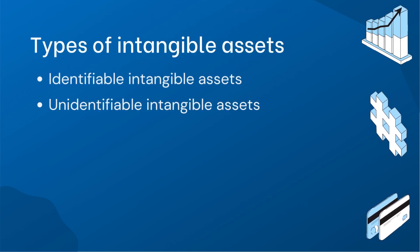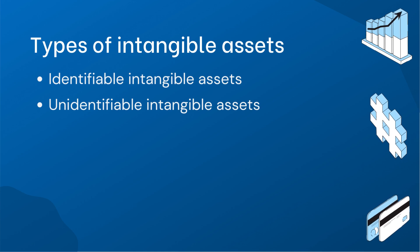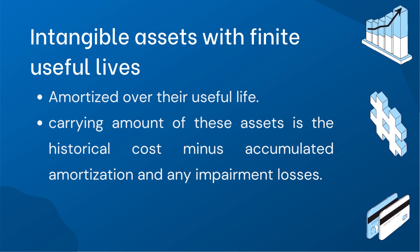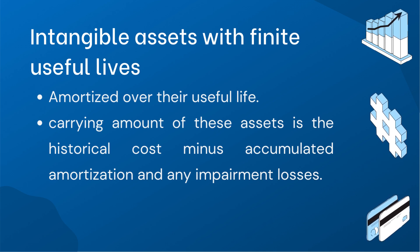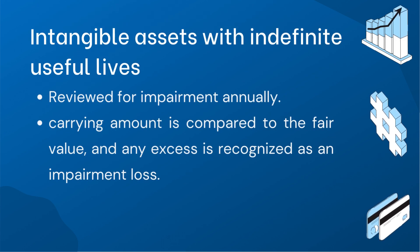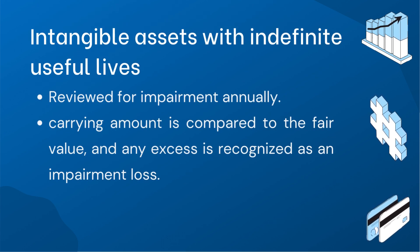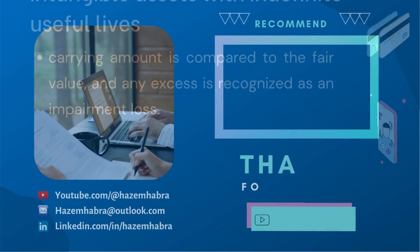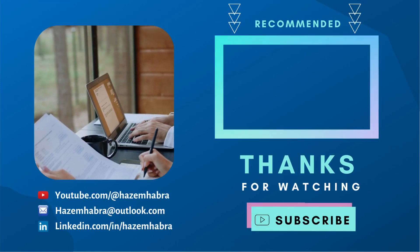There are two main types of intangible assets: identifiable intangible assets and unidentifiable intangible assets. Intangible assets with finite useful lives are subject to amortization. The carrying amount of an intangible asset with a finite useful life is determined by subtracting the accumulated amortization and any impairment losses from its historical cost. The second type includes intangible assets with indefinite useful lives, such as goodwill. These assets are reviewed for impairment annually or more frequently if there are indicators of potential impairment. And that concludes our discussion for today.